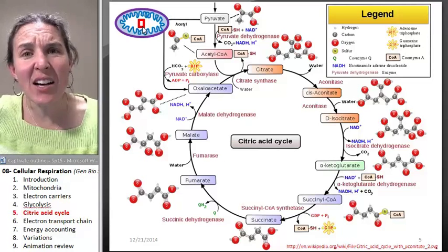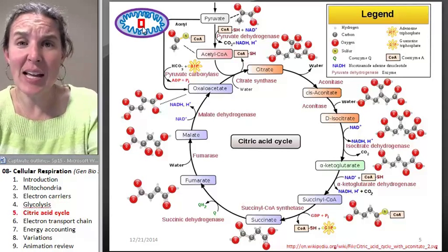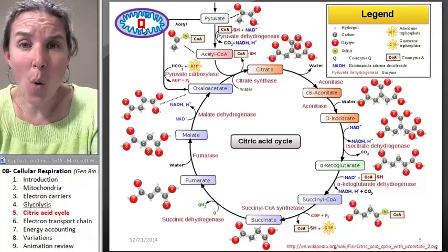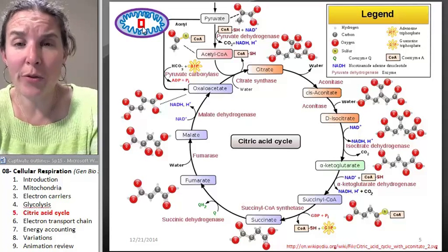This is actually happening in the mitochondrial matrix. So where did glycolysis take place? That was out in the cytoplasm of the cell. The whole cell's cytoplasm went through glycolysis.